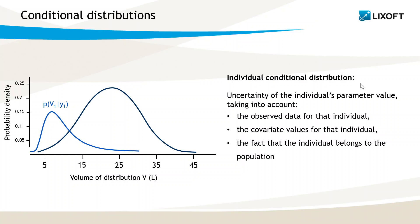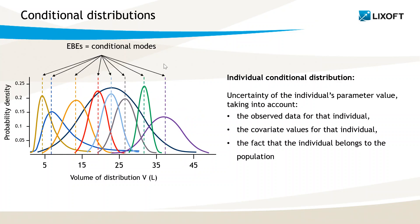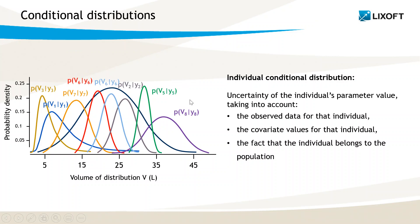Each individual has a different conditional distribution. Here are 8 distributions that represent the volumes for 8 different individuals. The conditional distribution is a probability distribution, meaning that for individual 8, its volume value is probably around 36, but there is also a small chance it is rather 45. The conditional modes, or EBEs, are found with a dedicated task which searches the maximum of the conditional distribution and represent the most probable values. But it is also interesting to estimate the whole distributions, not only the peaks, to have an idea of their uncertainties. This is what is done in the task conditional distribution.